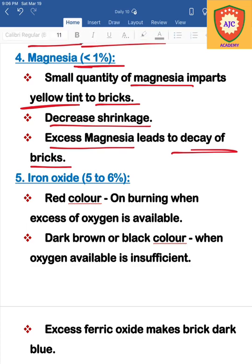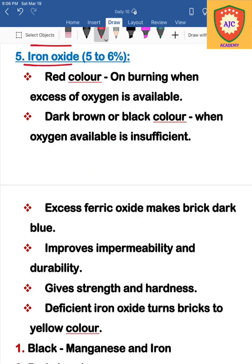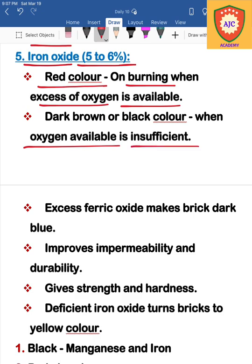The next ingredient is iron oxide, which is present at 5 to 6 percent. Iron oxide is responsible for the color of the brick. If burning is sufficient, it produces a red color. If burning is insufficient, it produces a dark brown or black color. This is why the burning process is very important for brick color.